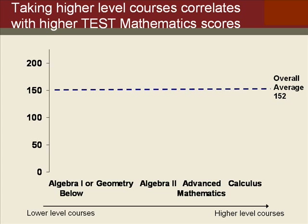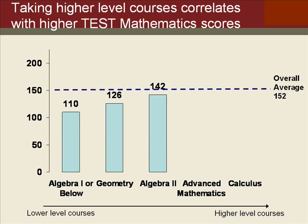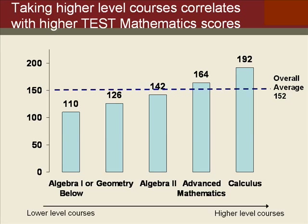And the overall average — instead of making you compare back and forth — I actually embedded it right into the graph. So now when I explain it, I can talk about our lowest level course, Algebra 1 or below: they score below the average. Geometry, Algebra 2, Advanced Mathematics now scores above the average, and Calculus scores well above the average. With this visual, we are easily able to do the comparisons and have the audience come to the conclusion we want them to come to.